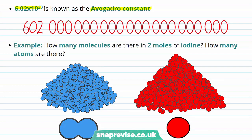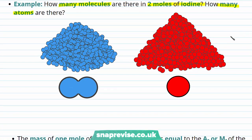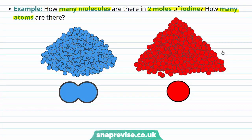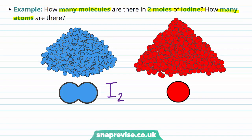The important point about the mole is that it's an amount of substance — it's a number. We can see what we mean by thinking about this question: how many molecules are there in two moles of iodine, and also how many atoms are there? Iodine is a group 7 element, so it's a halogen, and the halogens always exist as diatomic molecules. For example, iodine will naturally be found as an I₂ diatomic molecule. Therefore, if we have two moles of iodine, what we mean is that we have two moles of iodine molecules.